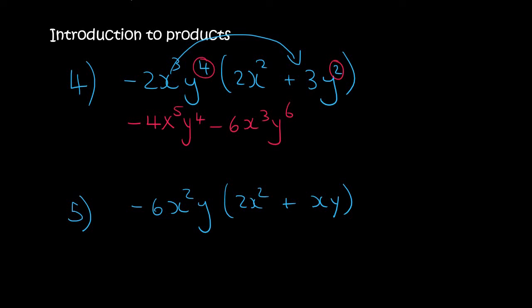And the last one is going to be minus 6 times 2, which is minus 12. Then 2 plus 2 is going to be 4. There is no other y, so you just put it as y.